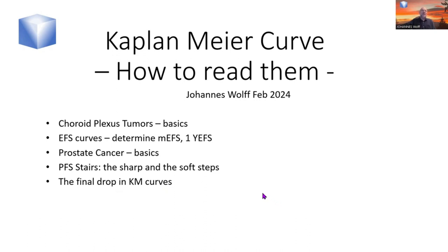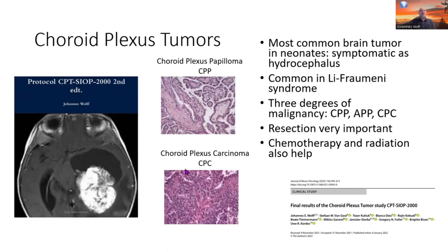It will have examples of real Kaplan-Meier curves from the literature, and therefore we will need some medical background. We'll talk about choroid plexus tumors — what they are — and then about event-free survival curves of choroid plexus tumors to explain median event-free survival times and one-year event-free survival rates. Choroid plexus tumors are the most common brain tumors in neonates — they're very rare, but in newborn babies they are the most common type. They are symptomatic as hydrocephalus — water in the brain where it shouldn't be — which in newborn babies typically shows as a large head, unless already known before birth from ultrasound.